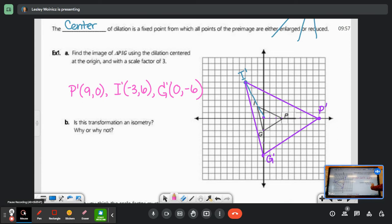So is this transformation an isometry? Why or why not? Well, if I look at my angles, I can see that angle G and angle G prime are congruent. I can see that angle I and angle I prime are also congruent. And I can see that angle P and angle P prime are congruent.